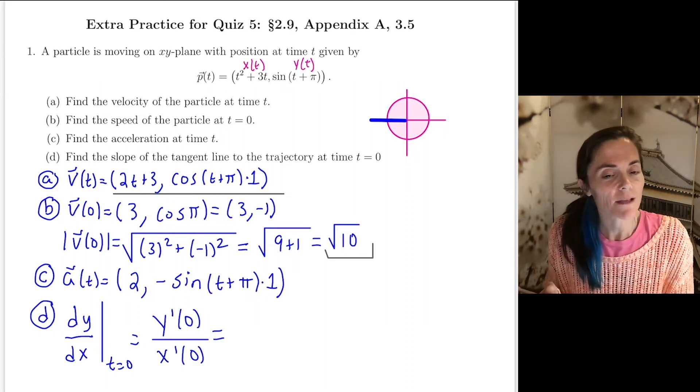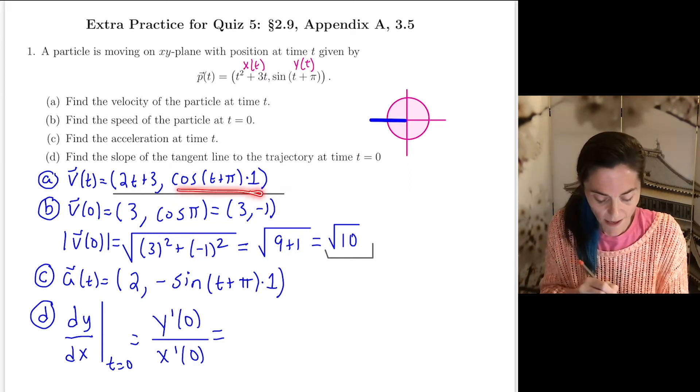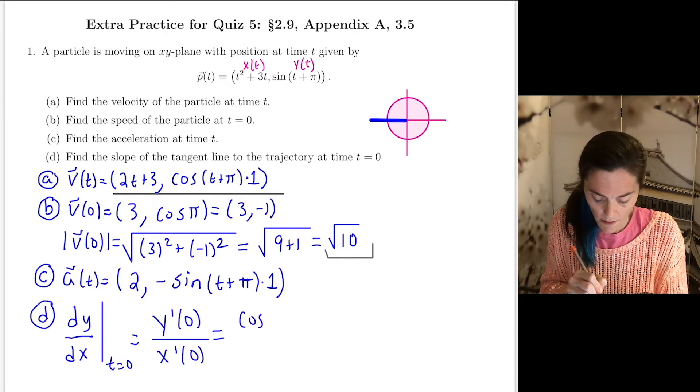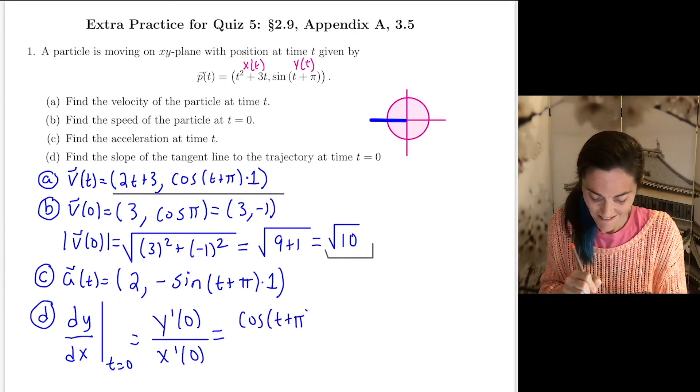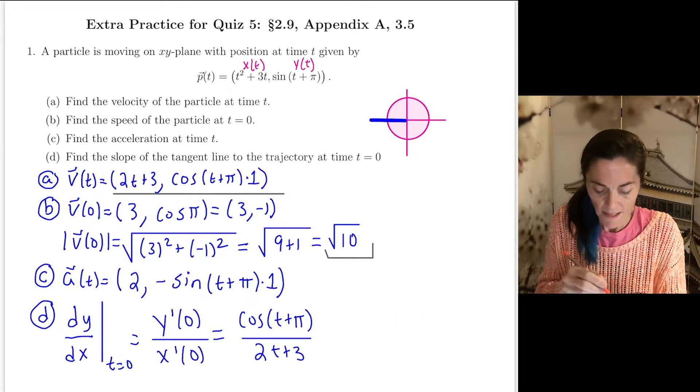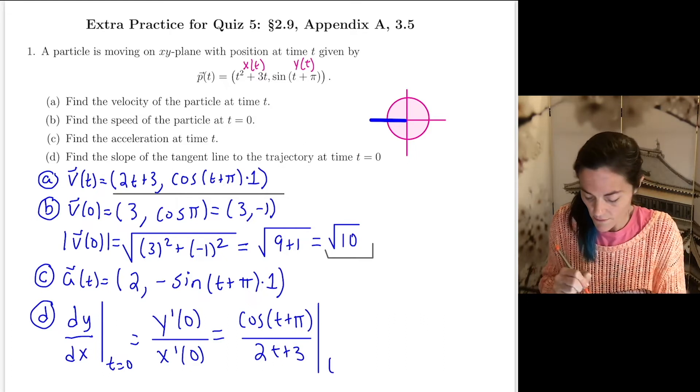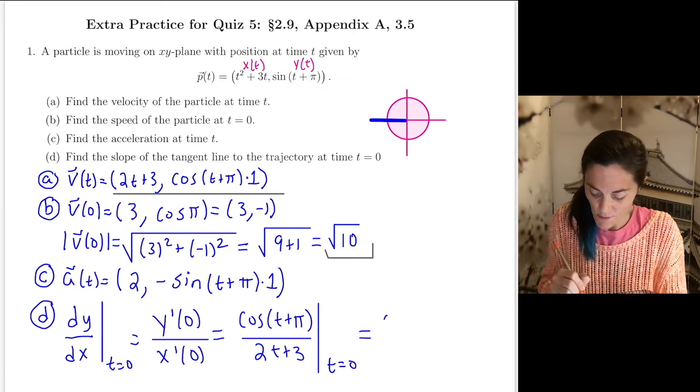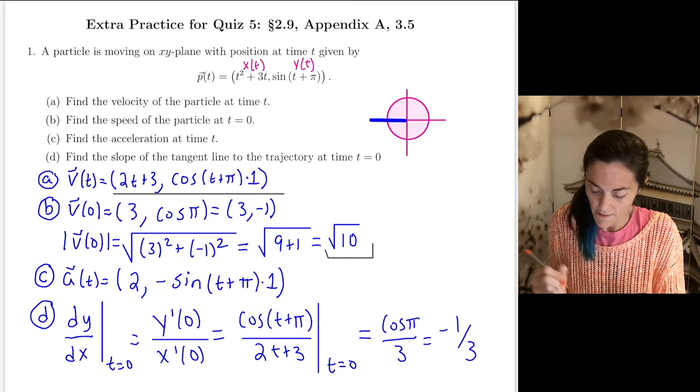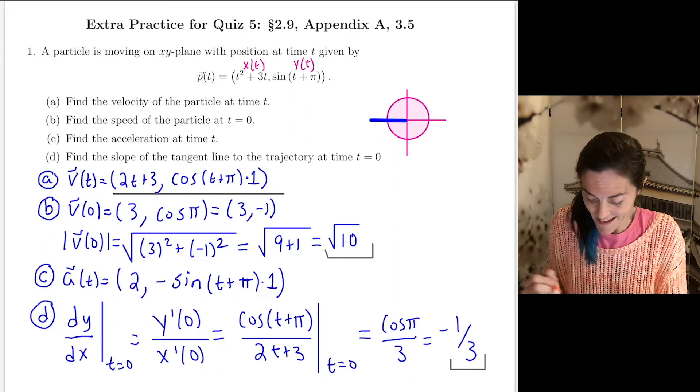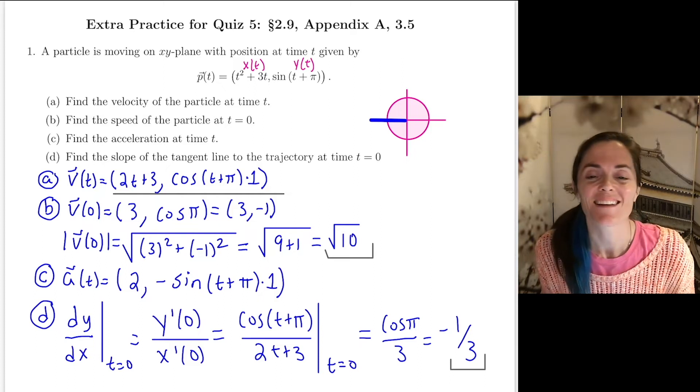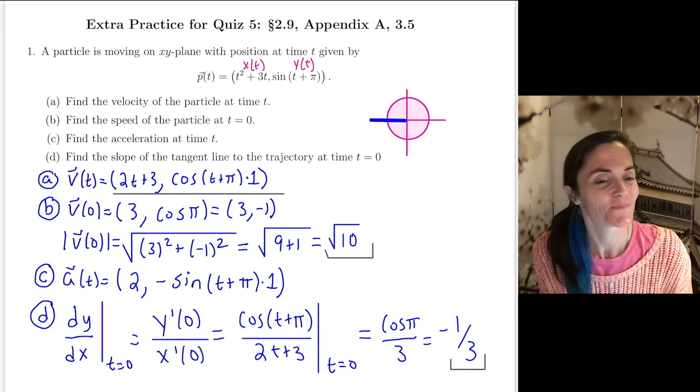If I call this first component x of t and this one y of t, this is consistent with the notation we used in class. Then dy/dx evaluated at t equals 0 is just y prime of 0 divided by x prime of 0. I already have y prime and x prime in my velocity vector. Y prime is cosine of t plus pi, and x prime is 2t plus 3. We want this evaluated at t equals 0. So this is cosine pi divided by 3, which is negative 1 over 3. This is the instantaneous rate of change of y with respect to x or equivalently the slope of the tangent line at time t equals 0.